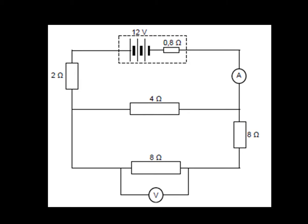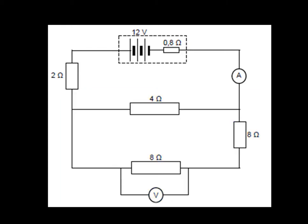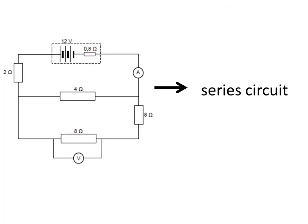The first thing we notice is that this is a parallel circuit. The first step in understanding a parallel circuit is to convert the circuit into its equivalent series circuit. We have to calculate the effective resistance of the parallel section so that we can replace the parallel section with a single resistor which is equivalent to the parallel section.